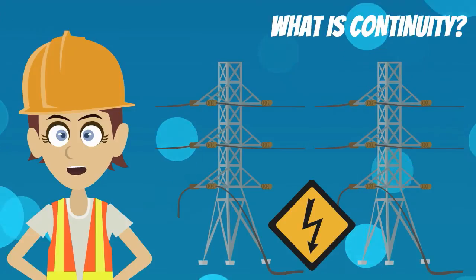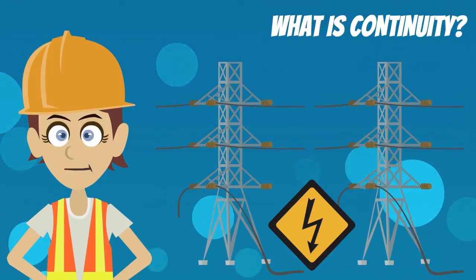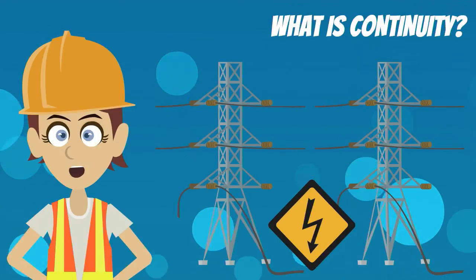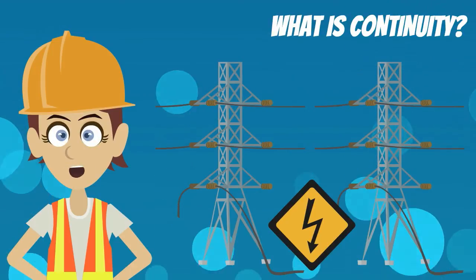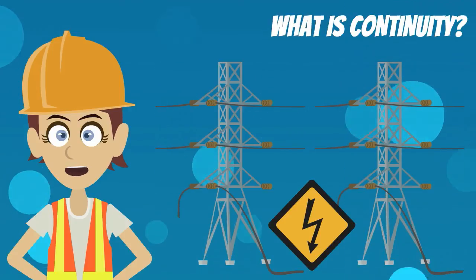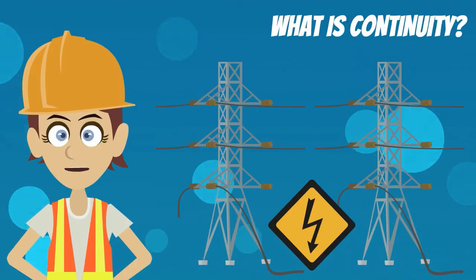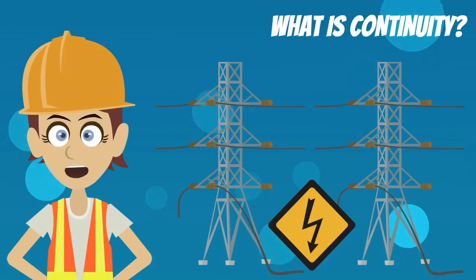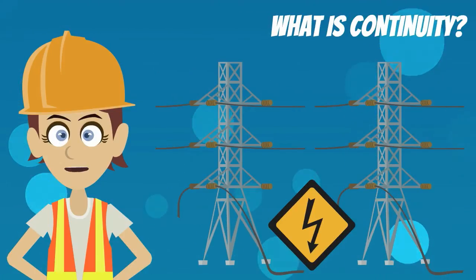Let's consider an example of an electric cable link being broken. Here electricity is the service provided. When the link is broken, there is no electricity transmitted — the electricity service is completely interrupted. It cannot be restored immediately; electricity has to be routed through another channel and will not be available until that rerouting is complete. This is called continuity.